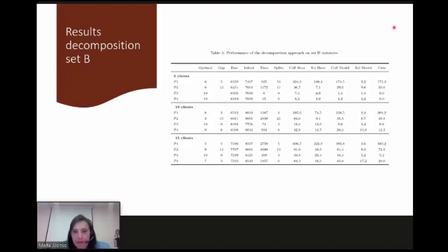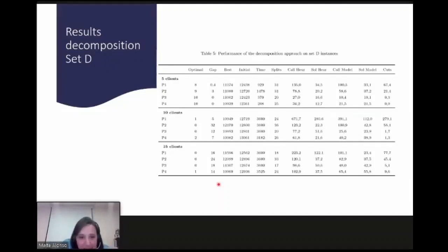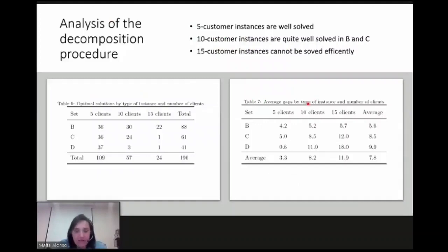For set C, there is a decreasing number of optimal solutions, and similarly for set D. As an illustrative example: the demand of clients three and four is split across different trucks, allowing the problem to be solved with four tracks instead of five. As noted by Archetti et al., the advantage of split delivery arises when each customer's demand is slightly more than half the truck capacity, which is the case here.